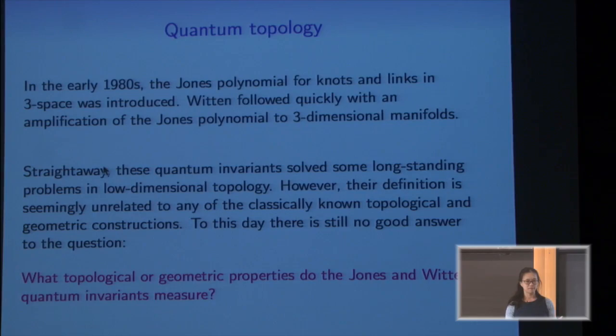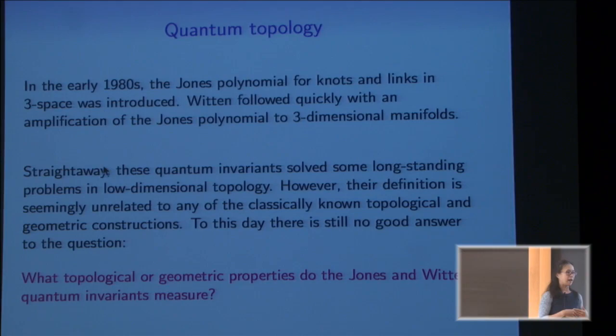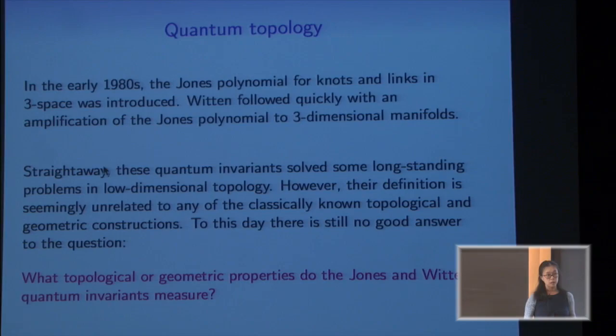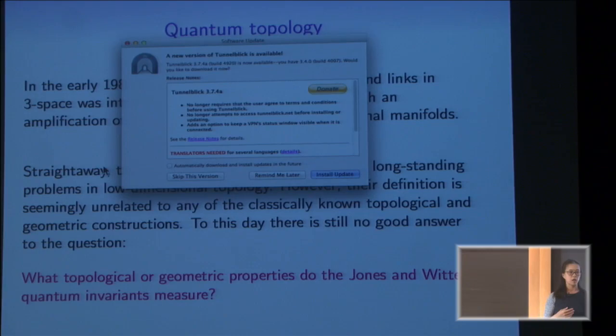Just a little background about quantum topology in general. In the early 1980s, Jones was working on these von Neumann algebras that came from statistical mechanics, and he realized that some of the constructions he was seeing gave invariants for knots and links in three-space. The construction was completely new — topologists had no idea about it. It was simple, combinatorial, and quickly used to prove really old conjectures like Tait's conjectures from knot theory that were 100 years old.